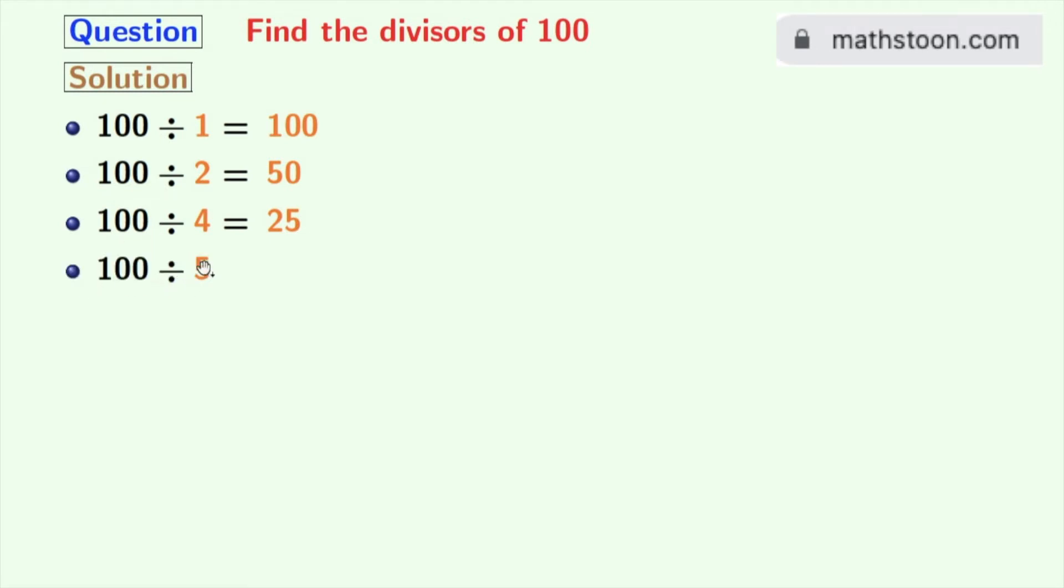100 divided by 5 is equal to 20. So, 5 and 20 will be the divisors of 100.